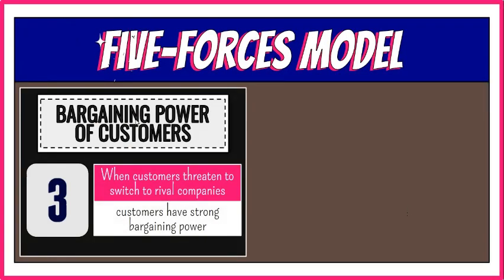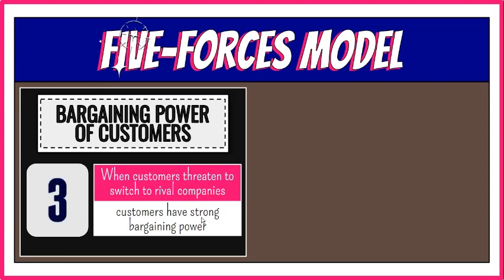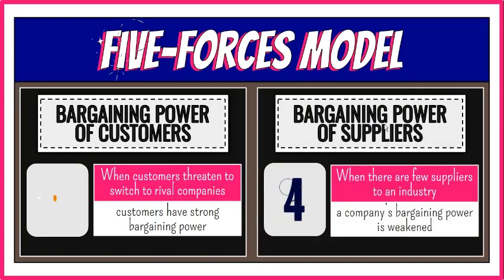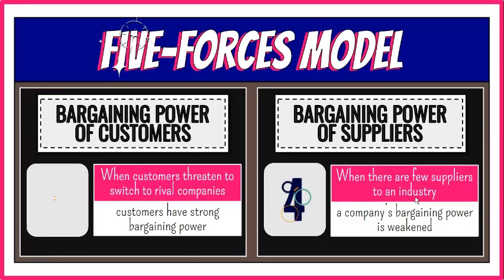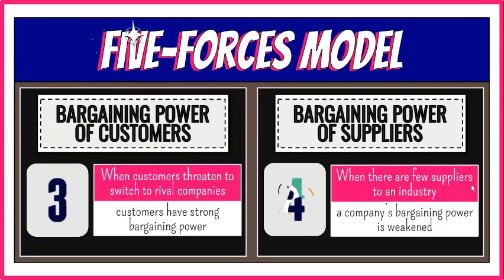Third, bargaining power of customers — when customers threaten to switch to rival companies, they have strong bargaining power. Therefore, a company needs to increase its competitive advantage by developing innovations to retain their customers. Fourth, bargaining power of suppliers — a company's power is weakened when there are few suppliers to an industry. A company would depend on a supplier, and a supplier can drive up input costs and push for other advantages in trade. A company should then improve its competitive advantage to maintain the bargaining position.